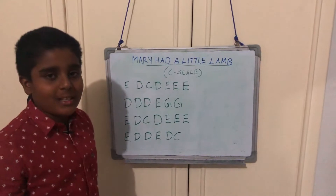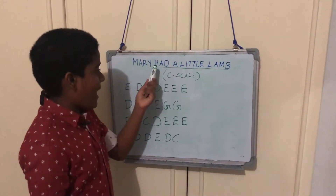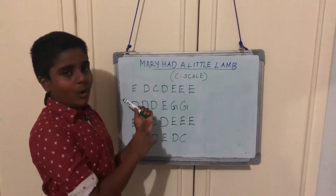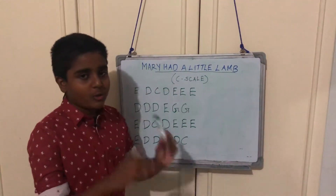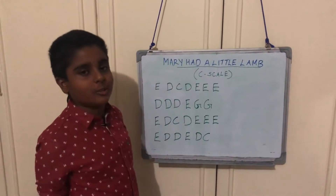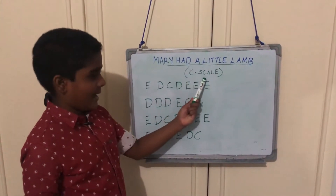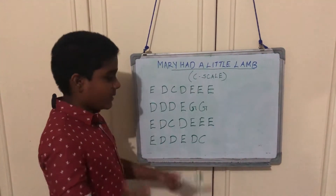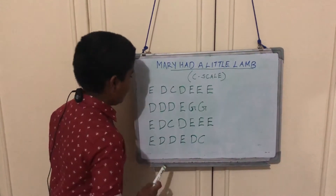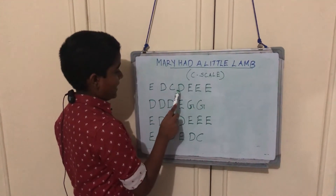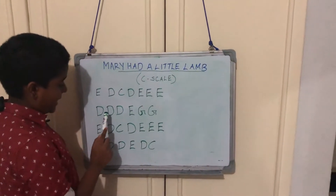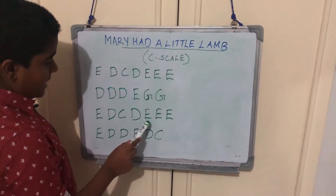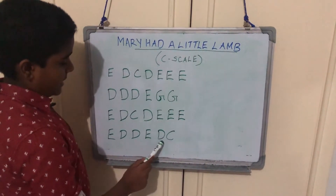Now let's learn the song 'Mary Had a Little Lamb.' But before learning, first we will learn the notes, then we will move on to playing. First, this whole song is in C scale. So now I am going to read the notes. The first note: E D C D, then E E E, then D D D, then E G G, then E D C D, then E E E, then E D D E D C.